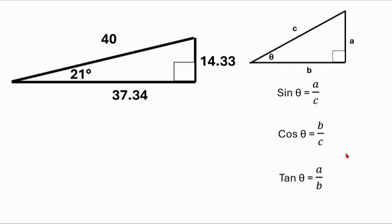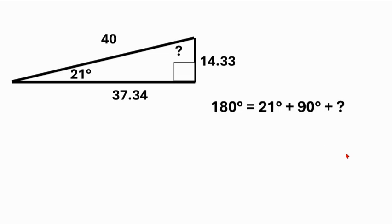There we go, so we have all the sides. Now we're going to find the missing angle. The fastest way to do this is just to recognize that all three angles in a triangle need to add to 180. So we have 21, we have 90 because we have a right angle, and then we have an unknown angle.